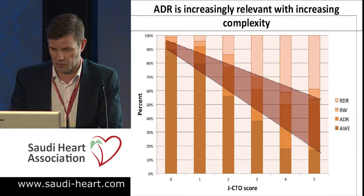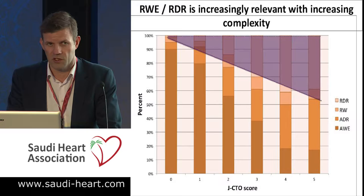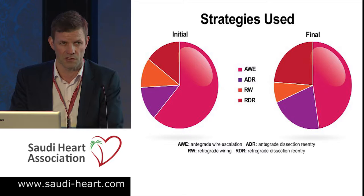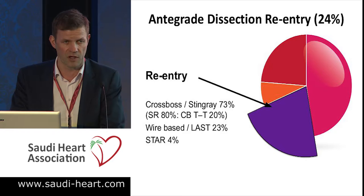When we look at our own data in the UK, our initial strategy is predominantly antegrade wire escalation. But our final strategy starts to use retrograde dissection re-entry in around about a quarter of cases. So it's not a panacea for all cases — it's useful for about a quarter.